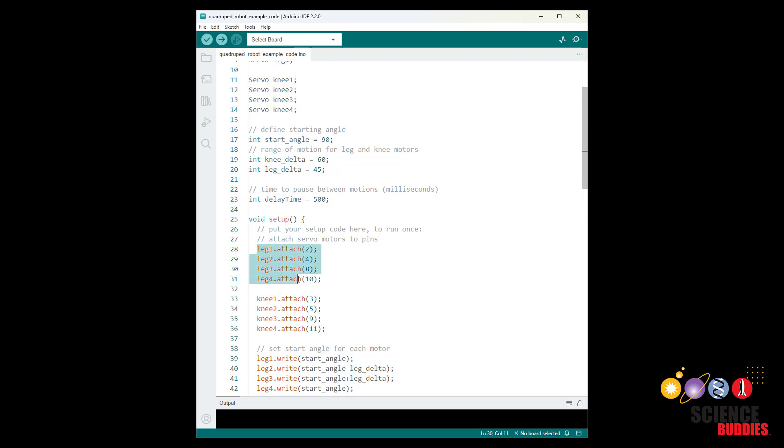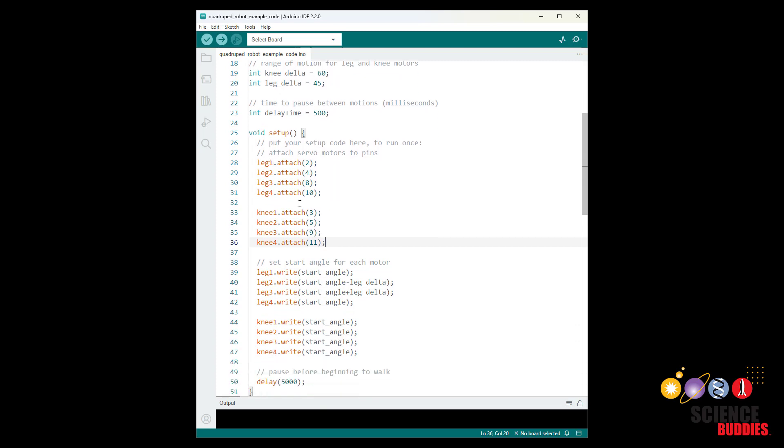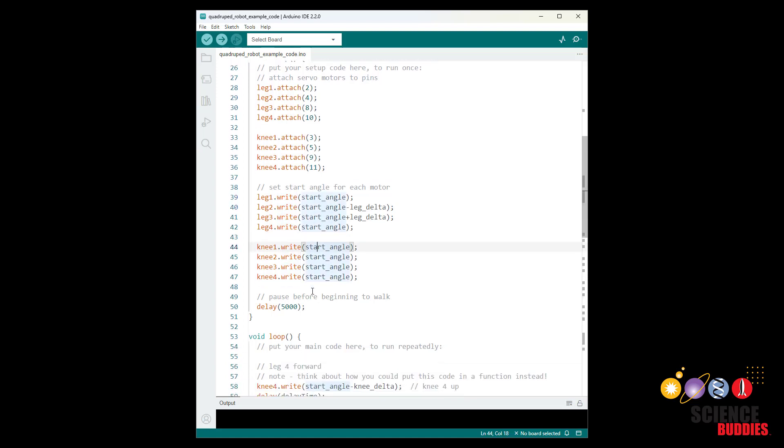In your setup function you need to attach each servo object to an Arduino pin make sure you keep track of which motor is attached to which pin and then use the write command to set the starting position for each motor. I have a long delay in here which gives me time to put the robot down and make sure it's standing up.